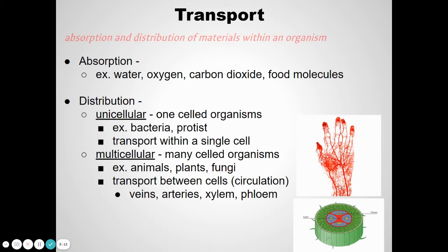Once materials are obtained, they have to be transported. You drank your Mountain Dew watermelon, and it's in your stomach — somehow the sugar and the nutrients need to get to the rest of the parts of your body. They need to get to your brain so you can think, and to the muscles in your legs so you can walk. That's transport — moving materials from one place inside the organism to another.